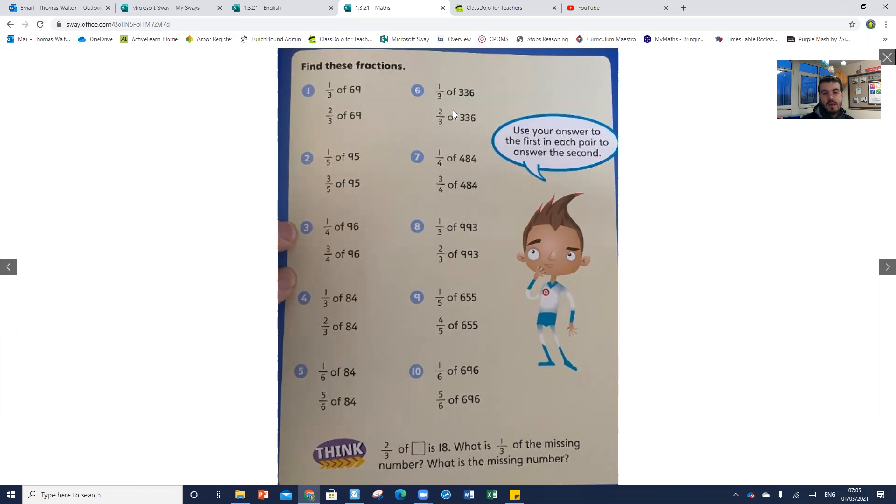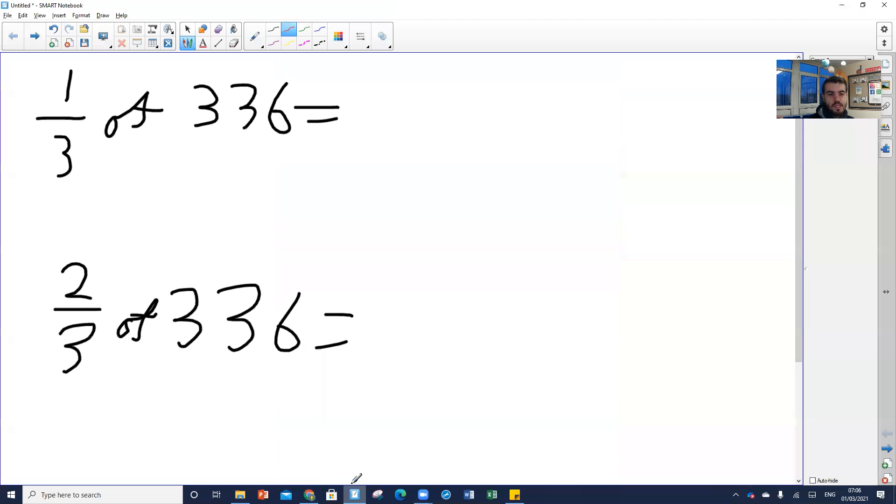So we're going to start by having a look at number six here. Number six says that you define one third of 336 and two thirds of 336. So if we start off by finding one third of 336, to do that we're going to use our bus stop. We're going to do 336 divided by three.